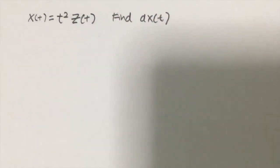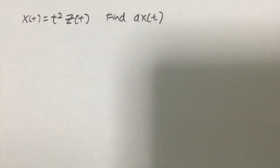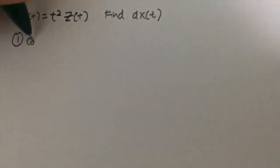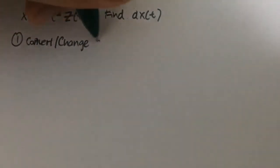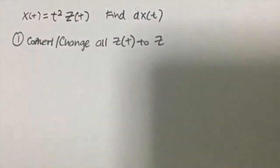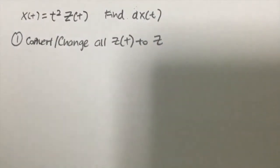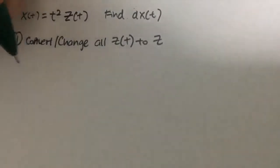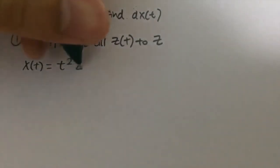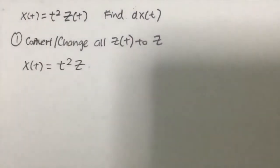Alright, so this is the question. In order to solve this, you want to find the stochastic differential equation for X(t). First thing that you need to do is to convert or change Z(t) to Z. The reason is basically very simple, because I want to really simplify the whole equation itself. So that means that my X(t) basically is equals to t squared Z. Okay, alright, so this is the first thing.